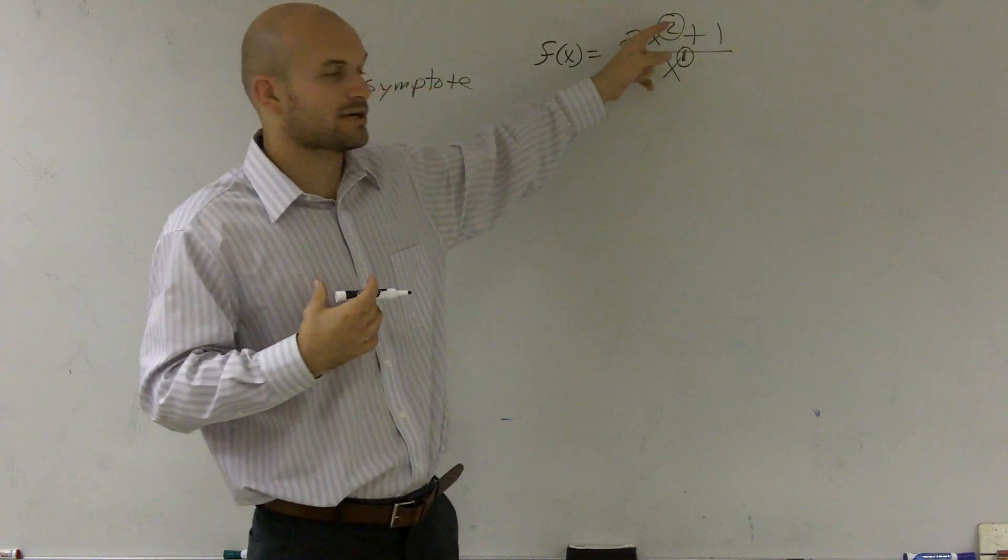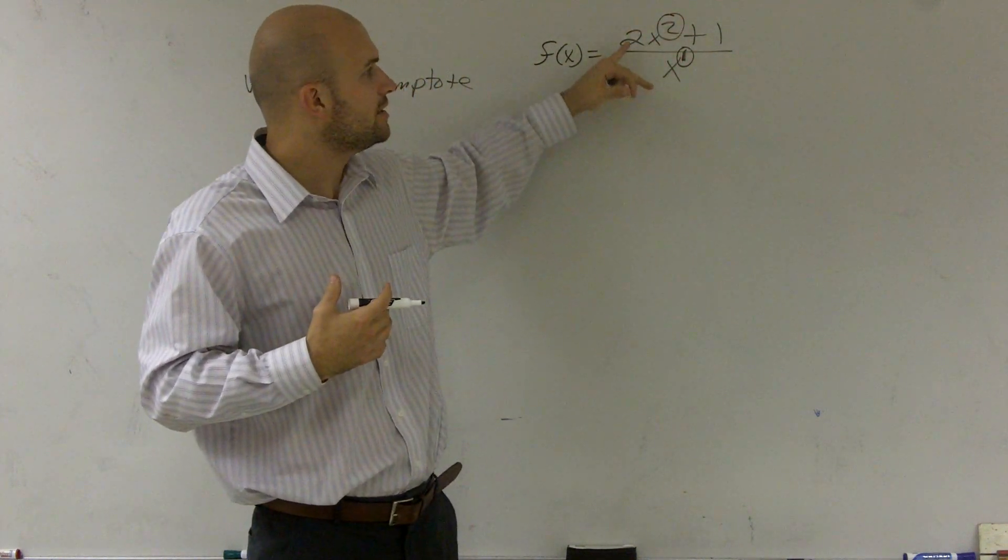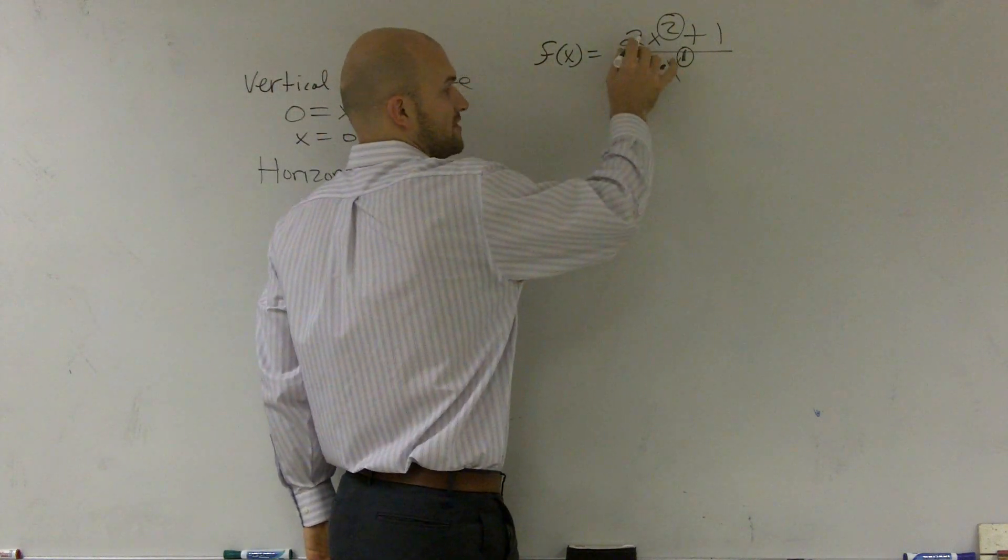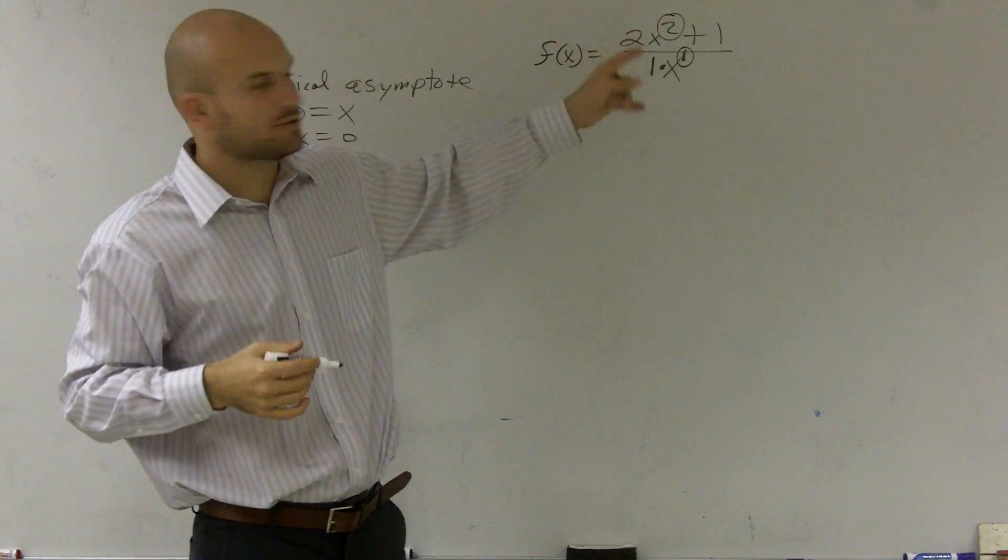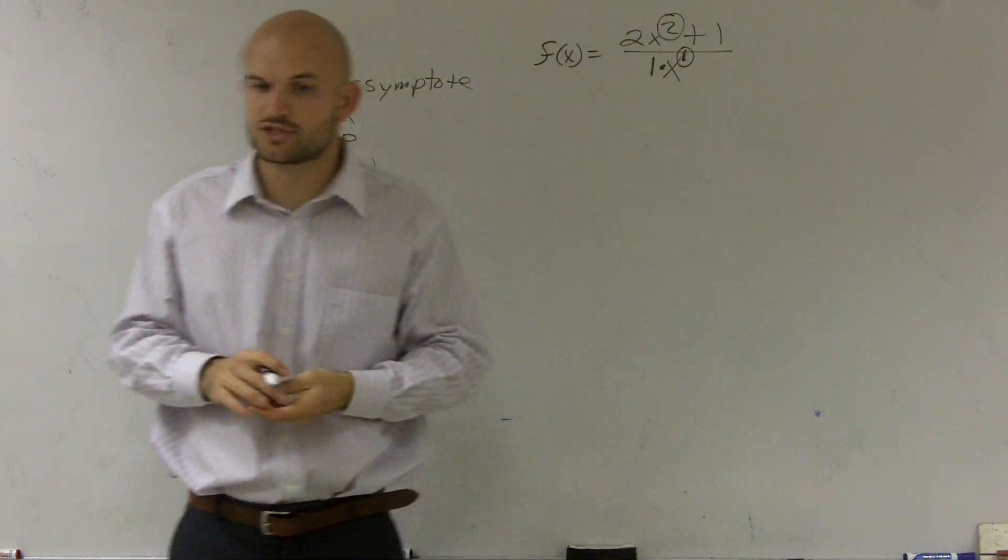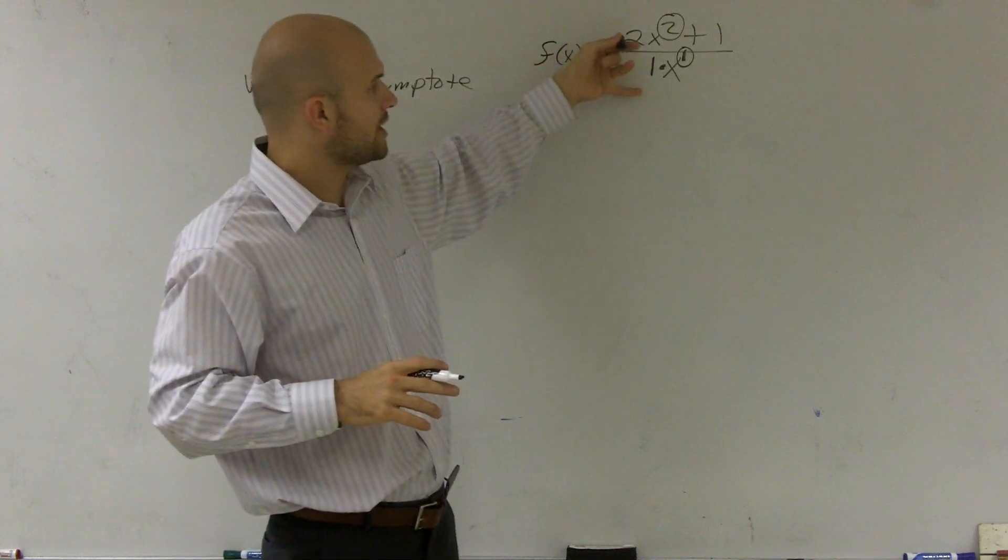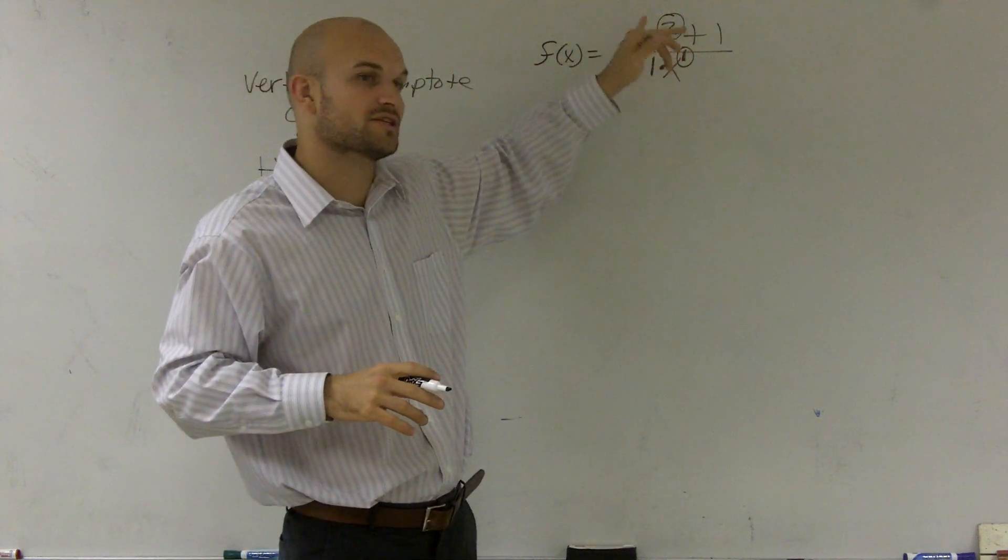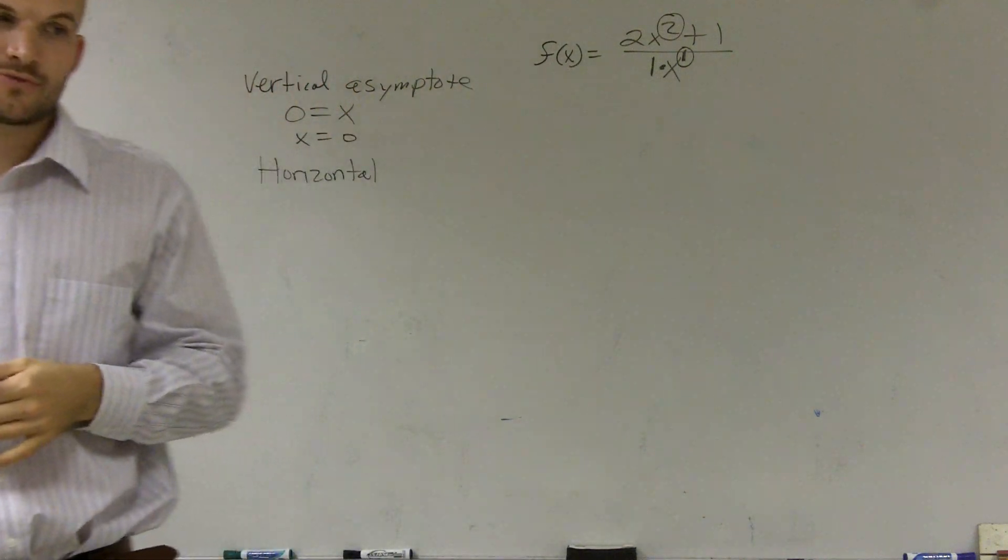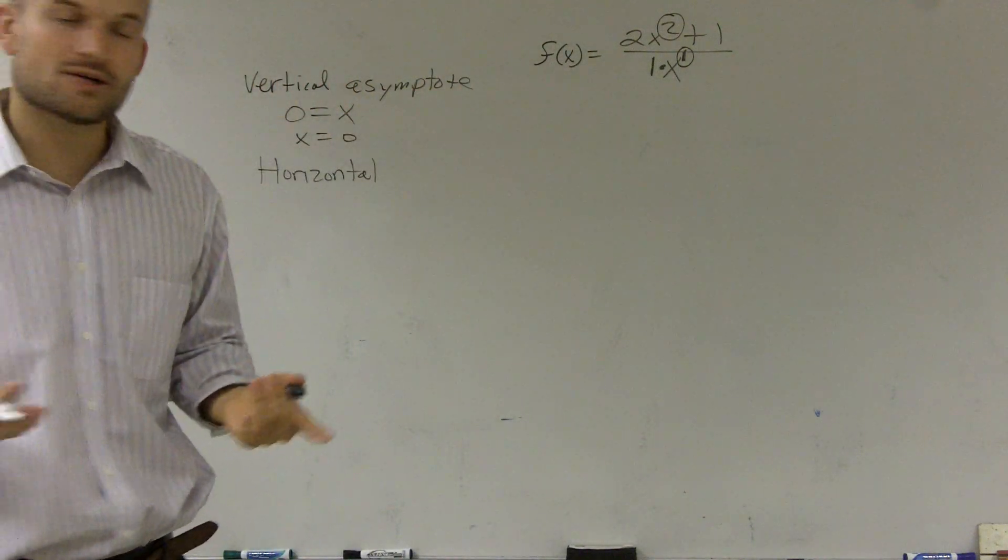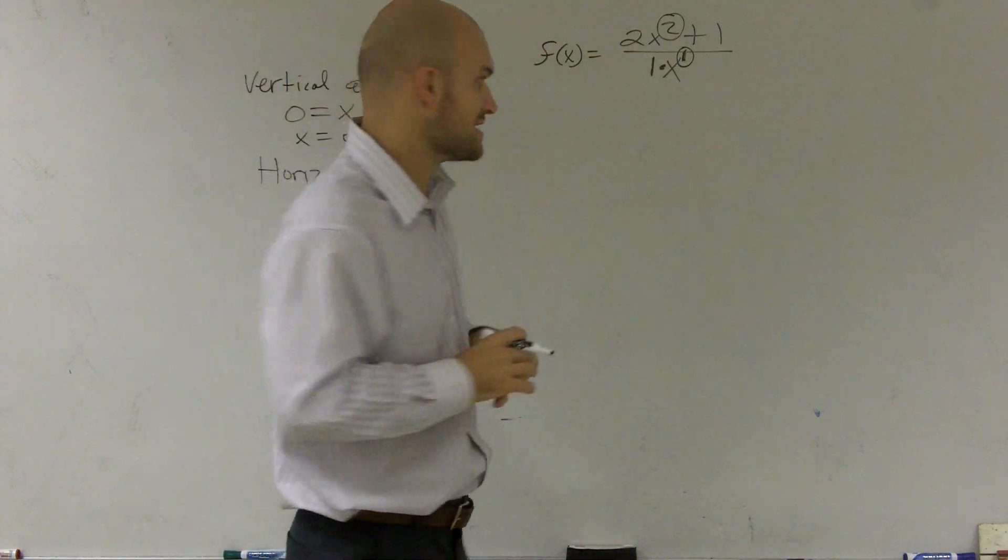So what I'm going to do now is I need to compare these. If the exponent up top was smaller than the exponent on the bottom, the horizontal asymptote would be zero. If they were equal to each other, if these were both x squareds, then you would divide the coefficient up top divided by the coefficient on the bottom. So it would be y equals 2 over 1, which is equal to 2. When you have a horizontal asymptote where the exponent up top is larger than the exponent on the bottom, there is not a horizontal asymptote. What there is is called an oblique or a slant asymptote.